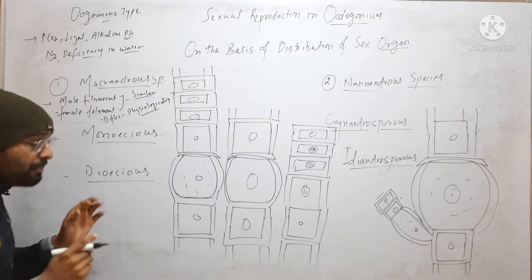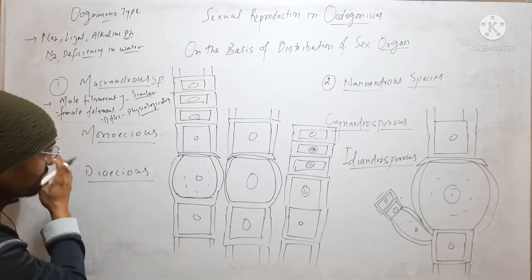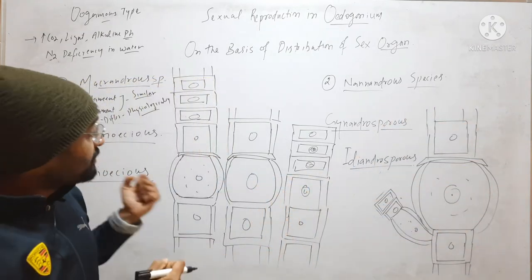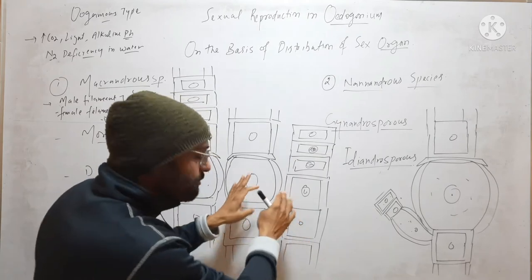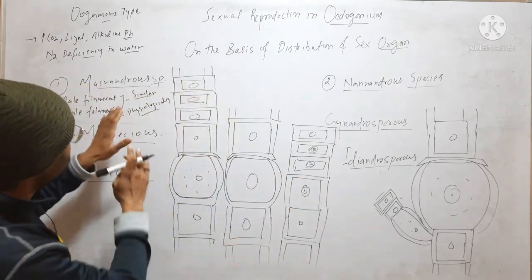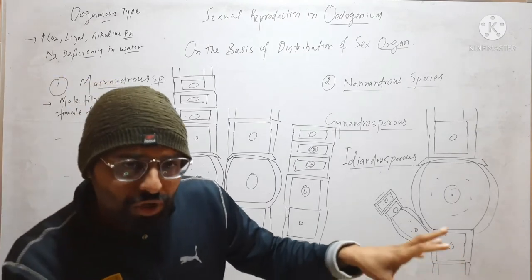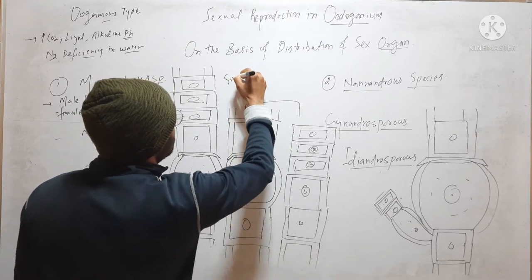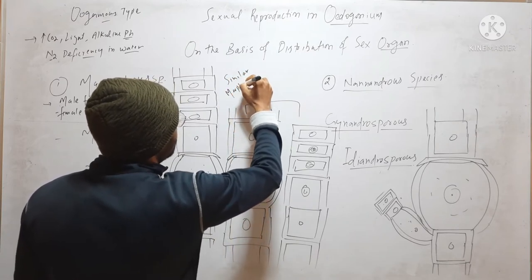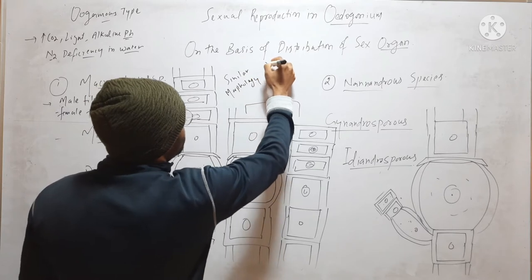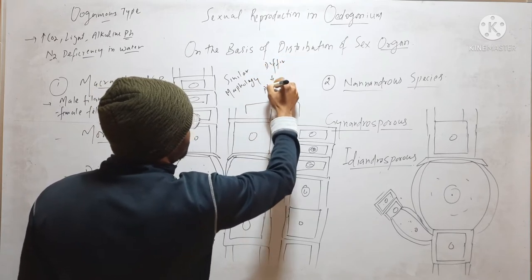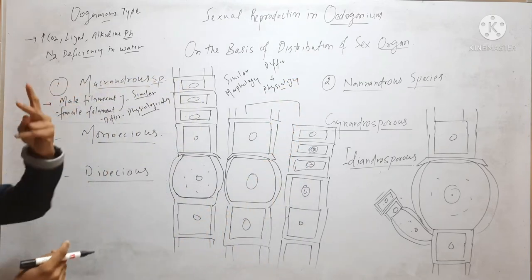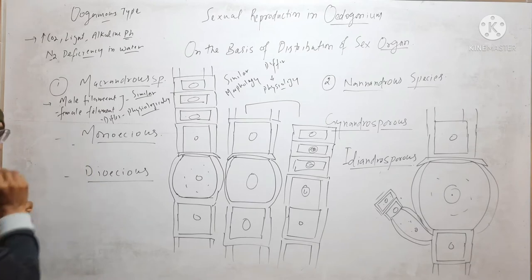So in Macroandrous species, the male filament is the filament that forms antheridia, and the female filament is the filament that forms oogonia. Both filaments are similar in morphology but differ in physiology. Macroandrous species is further divided into two types: monoecious and dioecious.